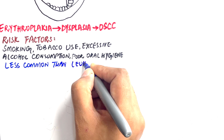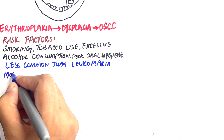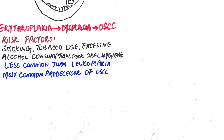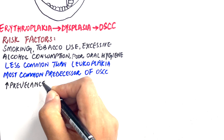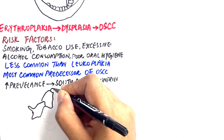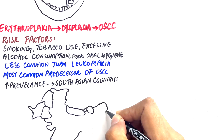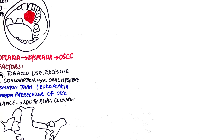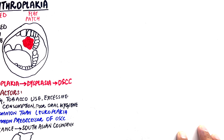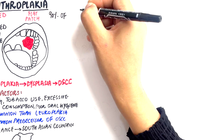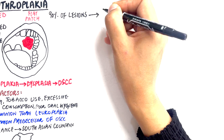Erythroplachia, although less common than leukoplakia, is one of the most common predecessors of oral squamous cell carcinoma. The incidence and prevalence of oral squamous cell carcinoma have increased several fold in the past few decades, especially in several countries of the South Asian continent. According to a study, about 90 percent of erythroplachic lesions have the potential to transition into oral squamous cell carcinoma.